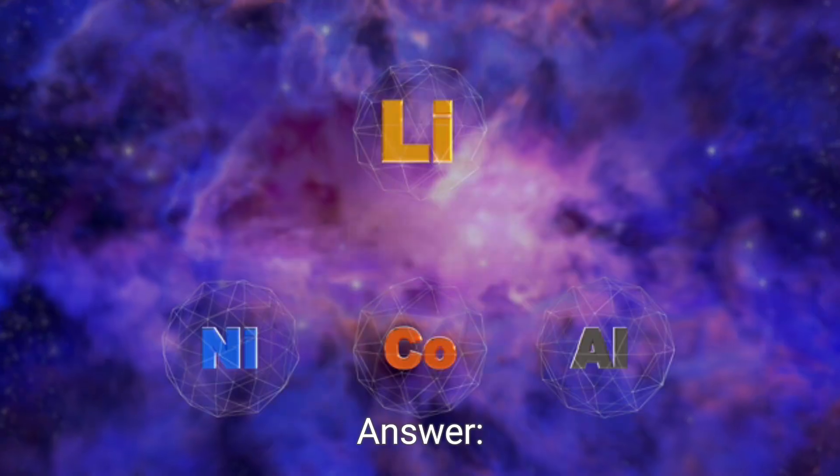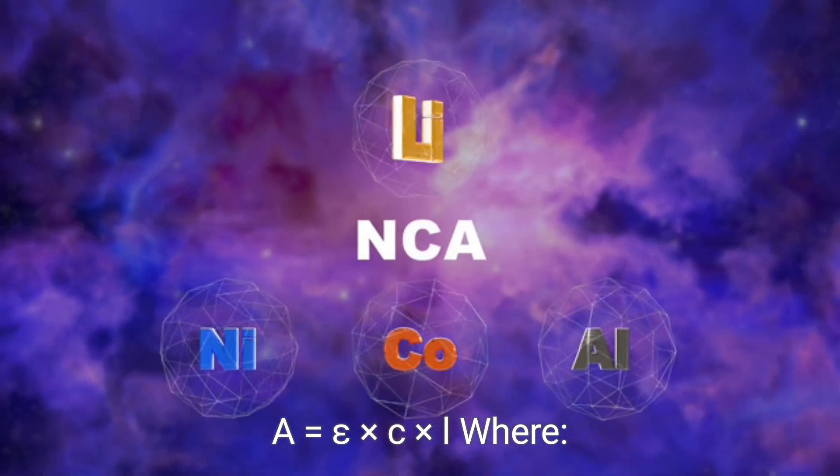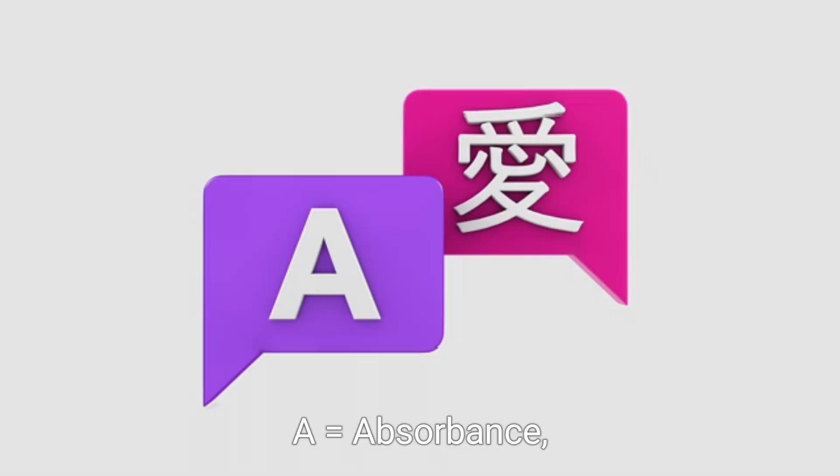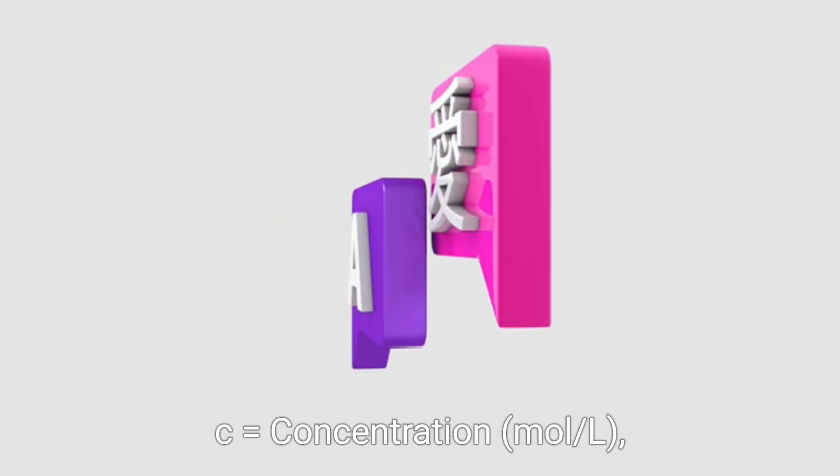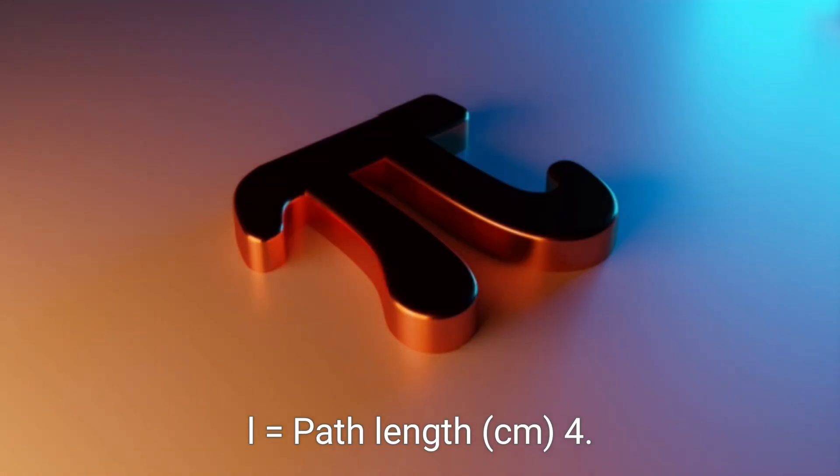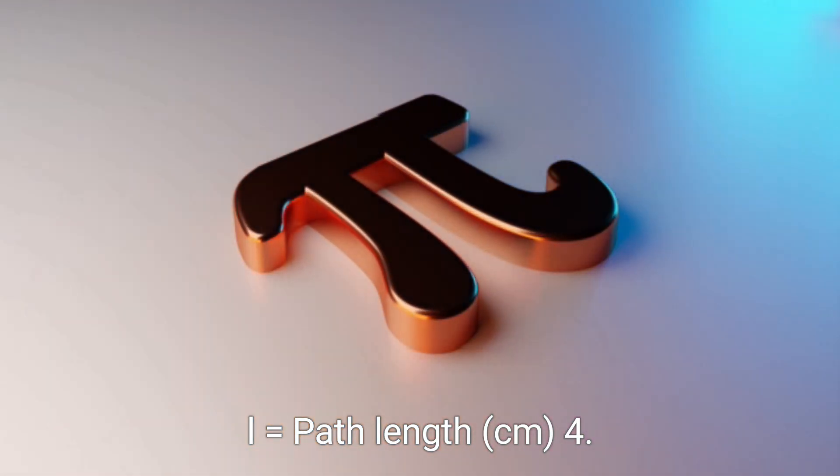State Beer-Lambert law. A equals epsilon times C times l, where A is absorbance, epsilon is molar absorptivity, C is concentration in mol per L, and l is path length in cm.